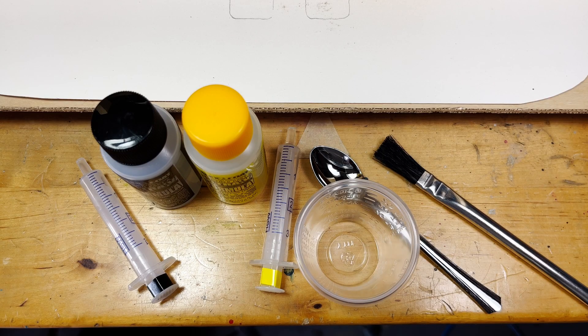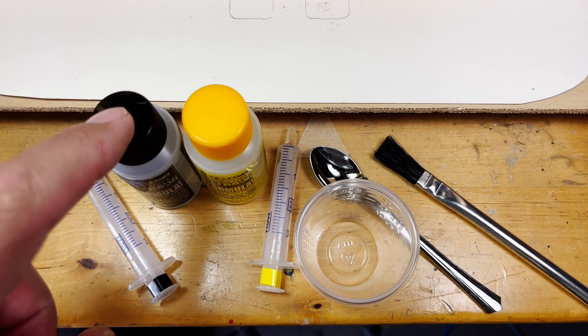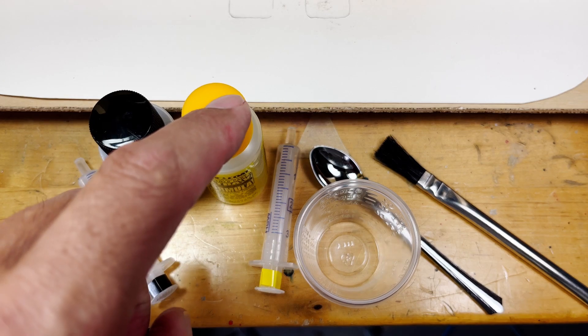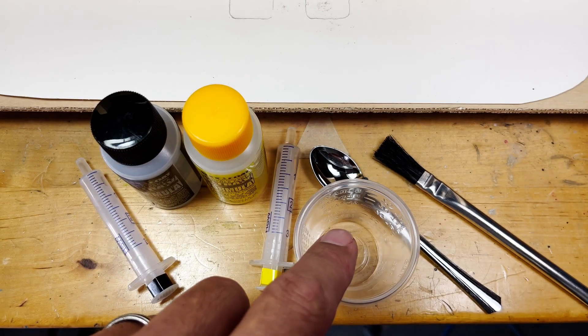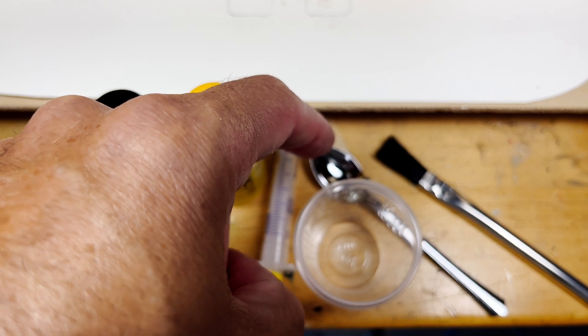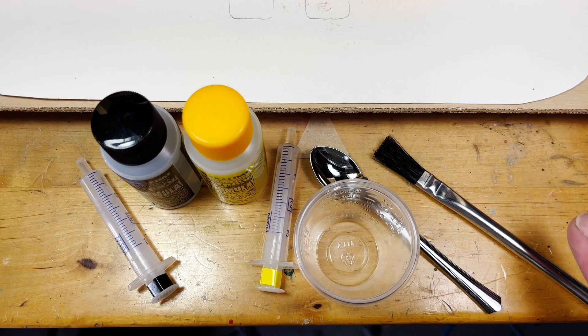I put everything together for the epoxy clear coat, including the hardener, the resin, a cup, a spoon to mix, and of course the brush.